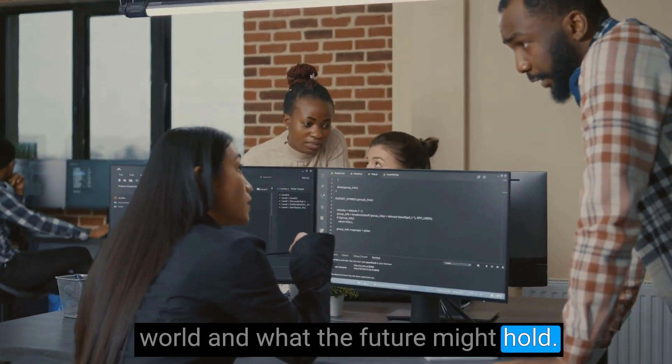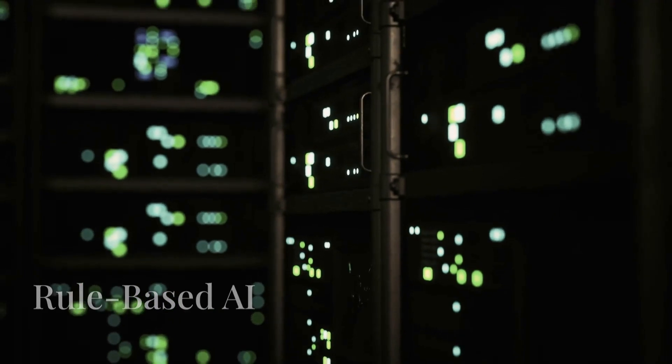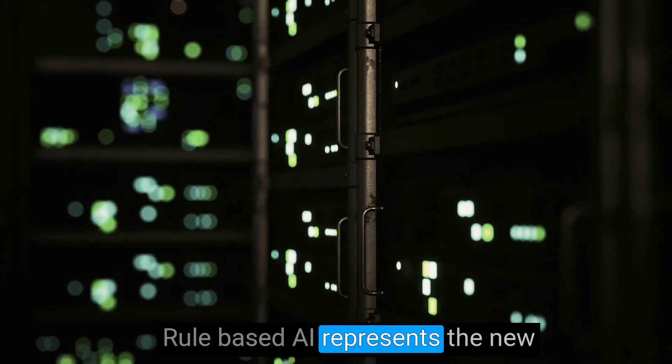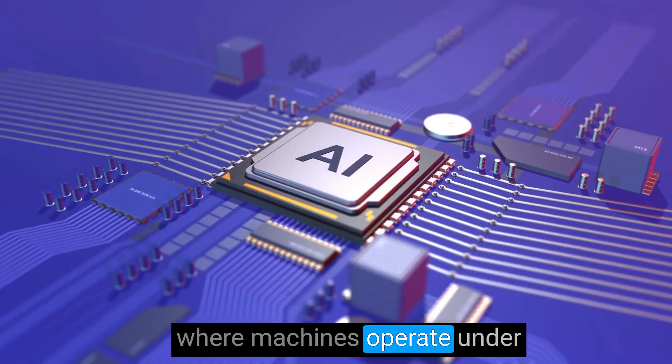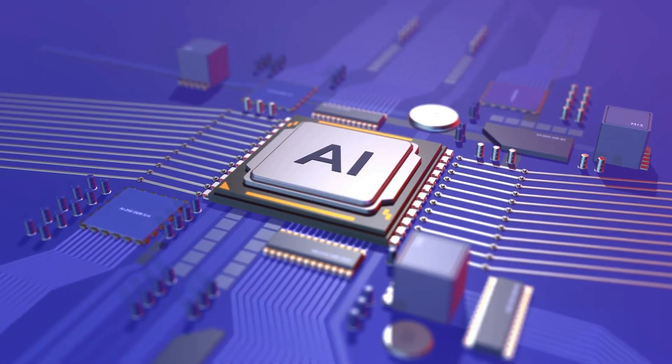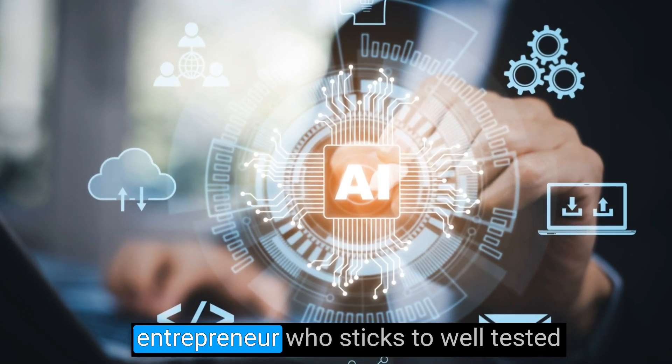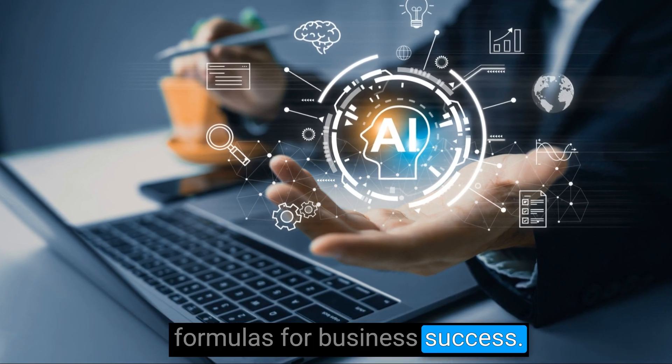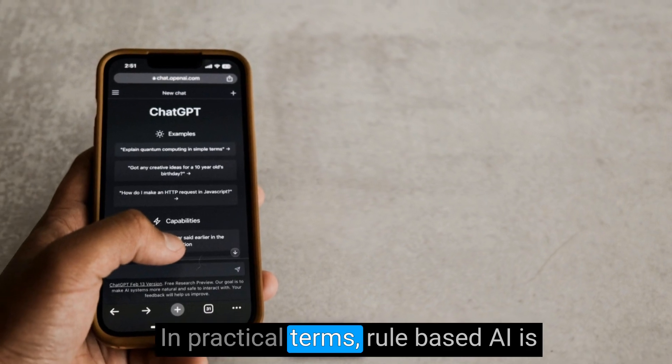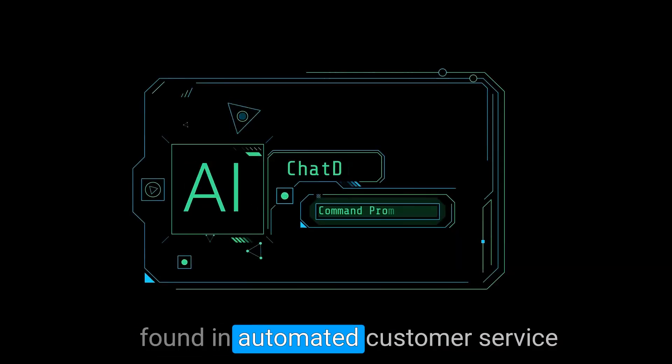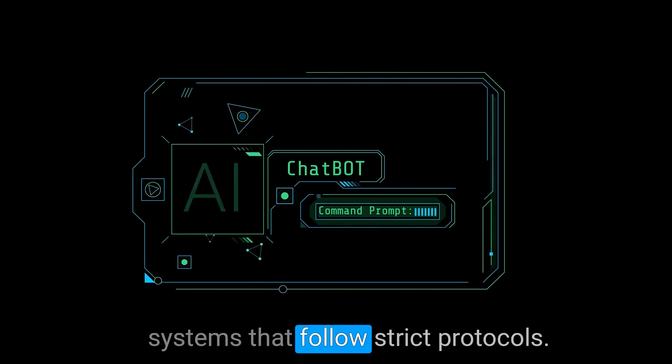Rule-based AI represents the initial stage of artificial intelligence, where machines operate under predefined rules and scenarios. This stage is akin to a new entrepreneur who sticks to well-tested formulas for business success. In practical terms, rule-based AI is found in automated customer service chatbots and simple decision-making systems that follow strict protocols.